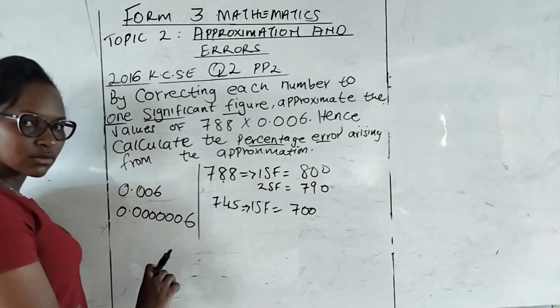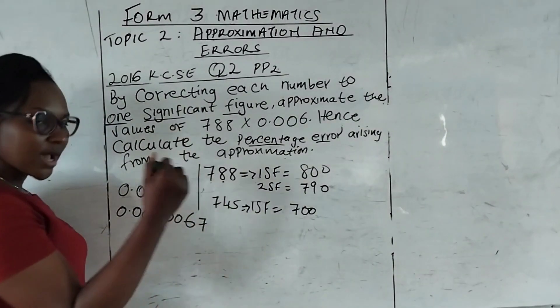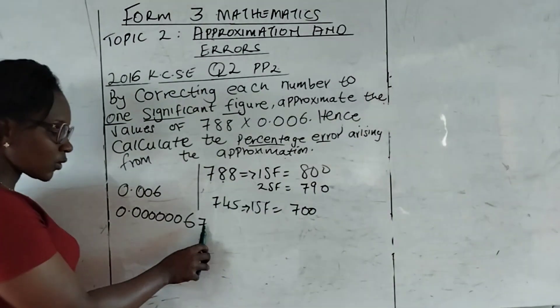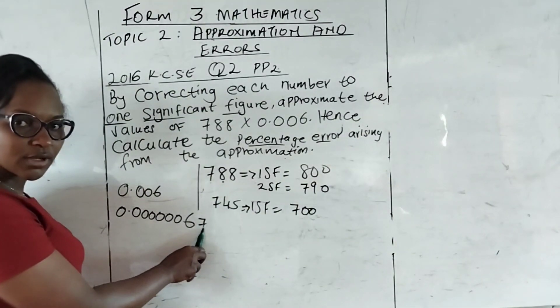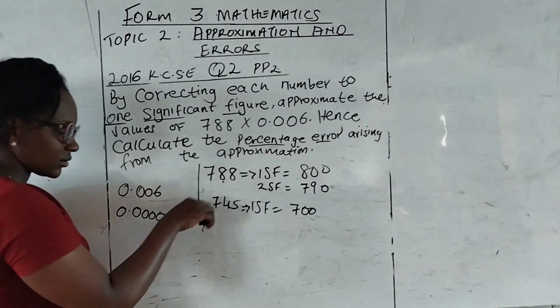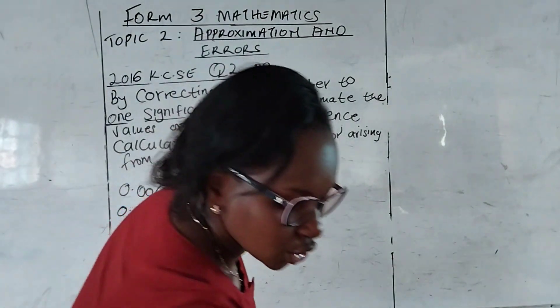So this one is 1. If we have 6, 7 to 1 significant figure, we just count to 6. Then look at 7. Is it 5 or more or less than 5? Then we will round it. This one will be 7. I hope it was important for me to look at that.